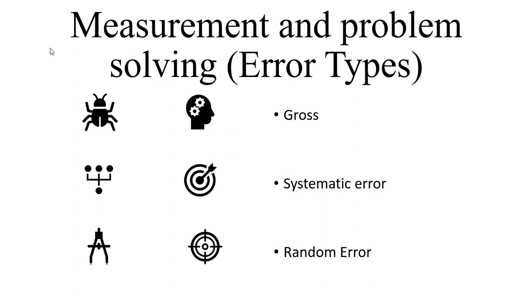There are three types of error that can occur: gross error, systematic error, and random error. Systematic error and random error together are called total error.